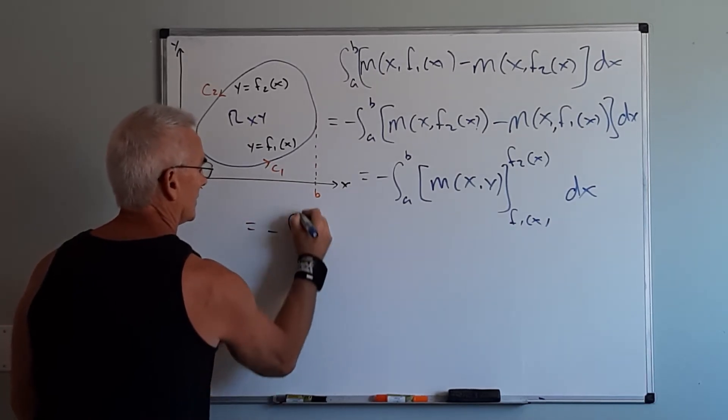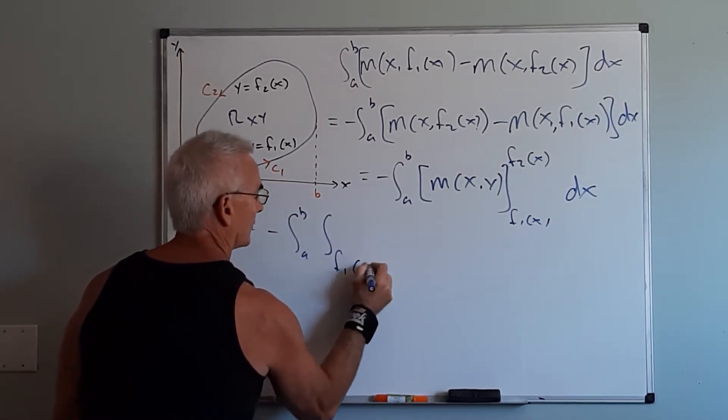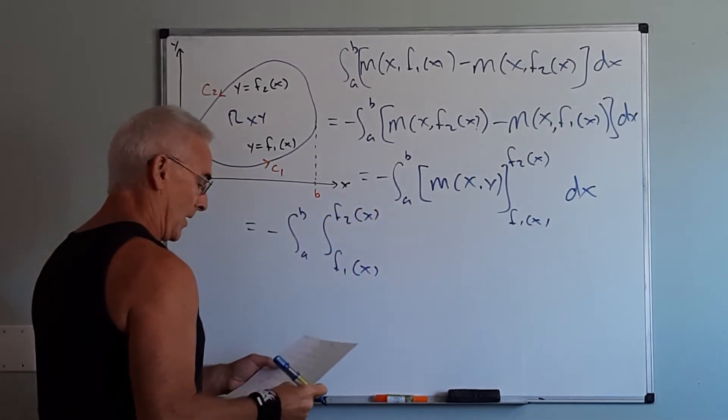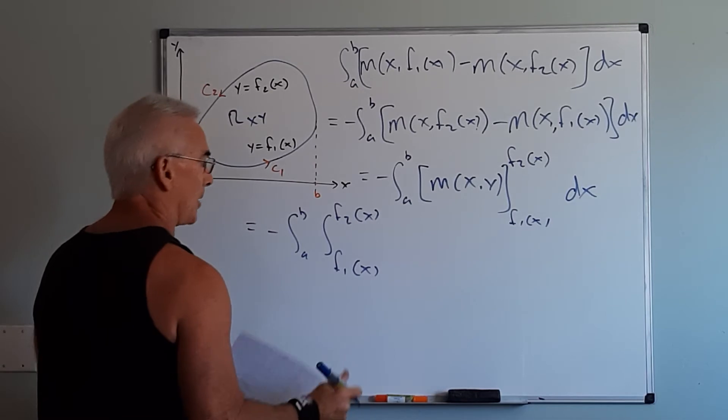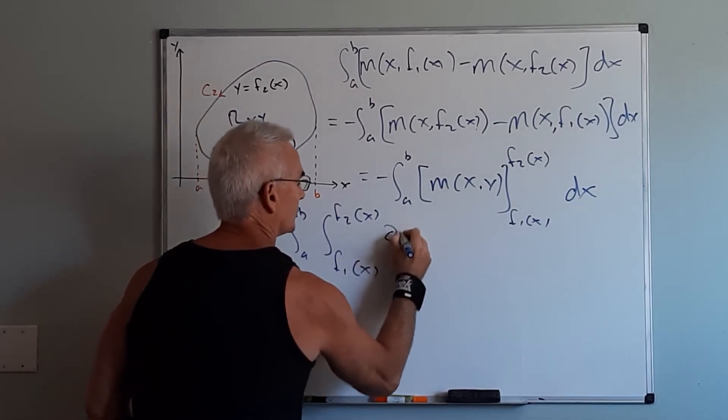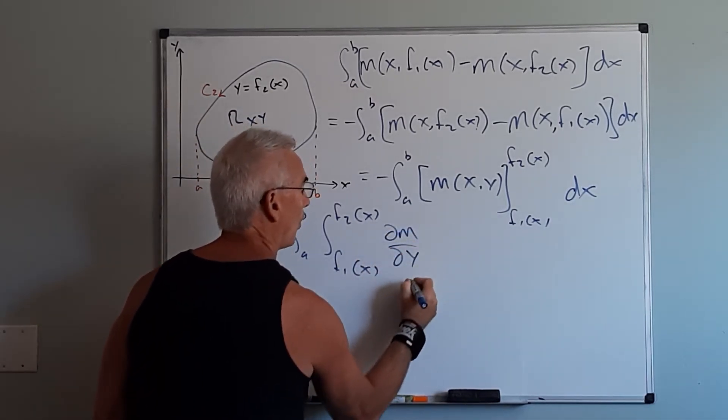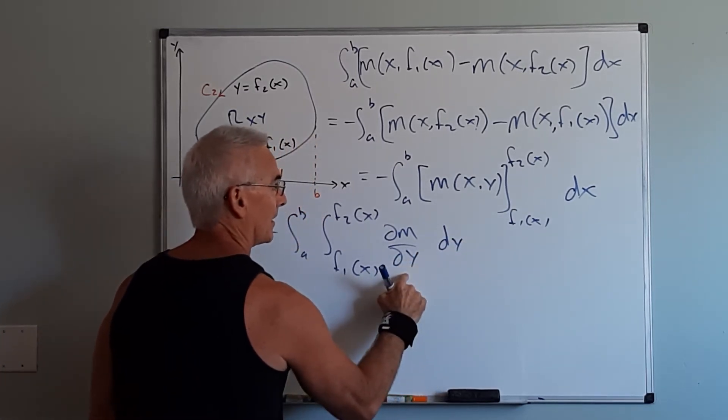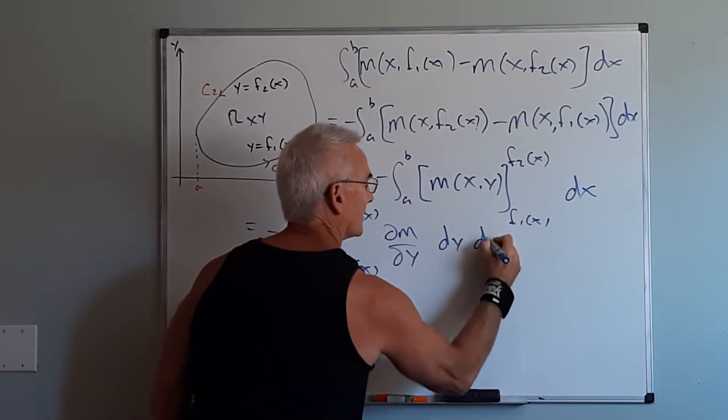Namely a double integral from f1 to f2, but of what? Very specifically the double integral of the partial of m with respect to y of x,y, integrated dy. That puts us here dx.